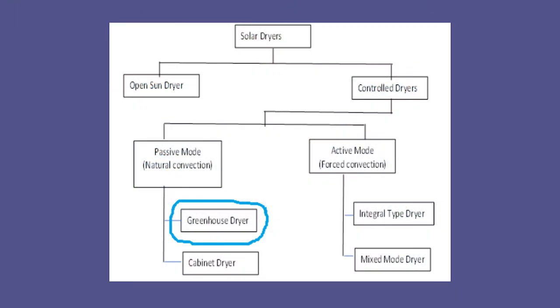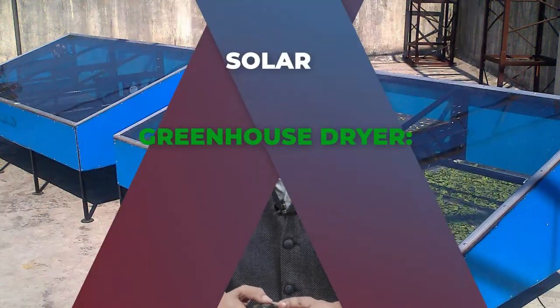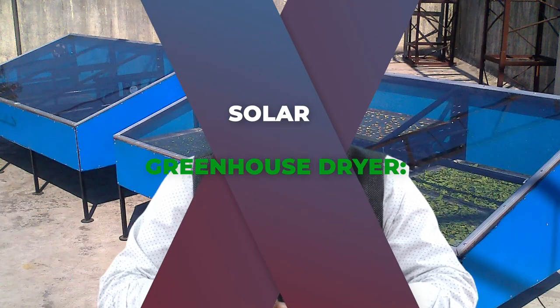Above problems can be resolved by using controlled solar dryers. In this classification, controlled solar dryers have two types of modes of operation: passive mode and active mode. In these passive and active modes we have greenhouse dryers and cabinet dryers. In this lecture we are mainly focusing on the greenhouse dryers and we have seen why greenhouse dryers are required and why solar dryers are superior compared to open sun drying.